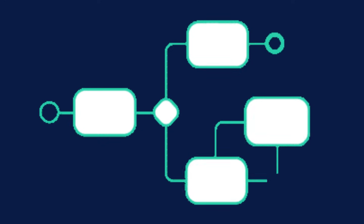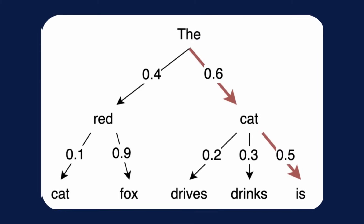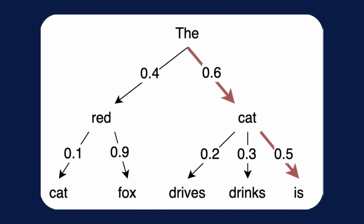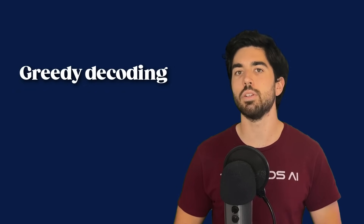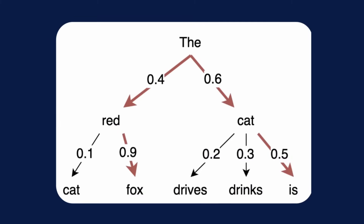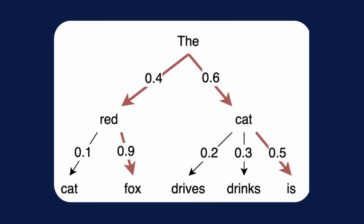Instead, predicting a slightly lower-probability token at step 1 might lead to a high-probability token at step 2, yielding a higher overall joint probability. Ideally, we'd compute this for all tokens in the vocabulary over many steps, but in practice that would require too many computations. Therefore, there are different decoding methods that try to find the right balance — from greedy decoding, top-k sampling, and nucleus sampling, which greedily select high-probability tokens, to Beam Search, which does a bit of exploration by predicting multiple tokens at once.